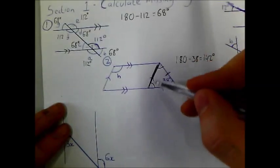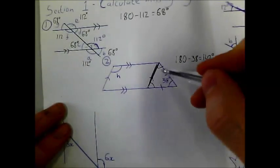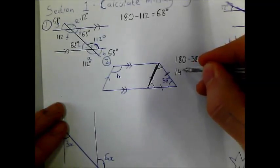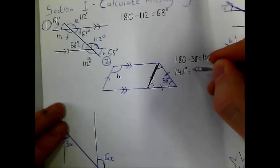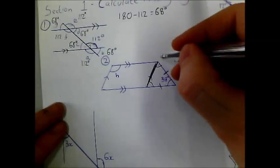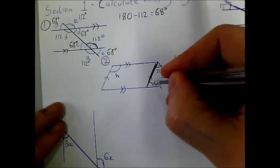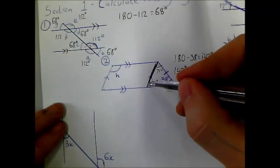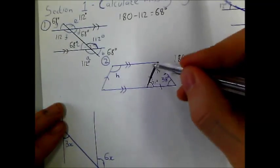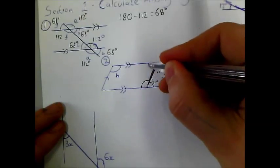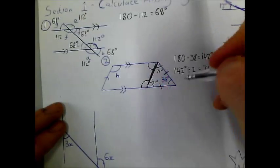Because these two angles add to 142 and they're the same angle, I can divide by 2 to get 71 degrees. So each one of these angles is 71 degrees. I notice that these lie on straight lines, so I can now work out this angle and this angle.